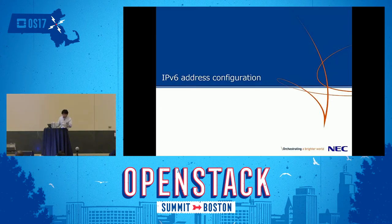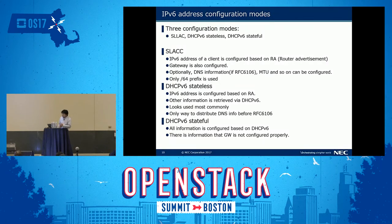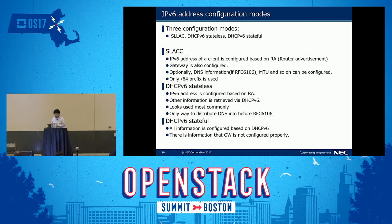The next topic is IP address configuration — this is how IPv6 addresses and additional information are configured to a VM or IPv6 client. This is per IPv6 specification, and there are three configuration modes: SLAAC, DHCP stateless, and DHCP stateful. If you are running an IPv6 environment, you might be familiar with these.